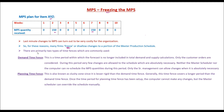There are primarily two types of time fences which are commonly used. Time fences are used to freeze the MPS — during these time fences, the MPS is frozen in different ways. The first is the demand time fence and the second is the planning time fence.